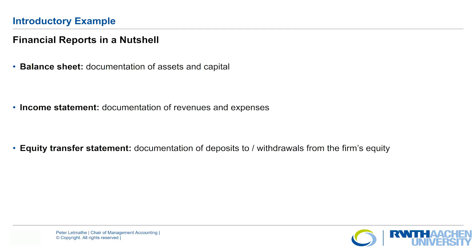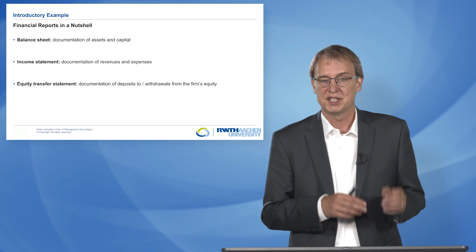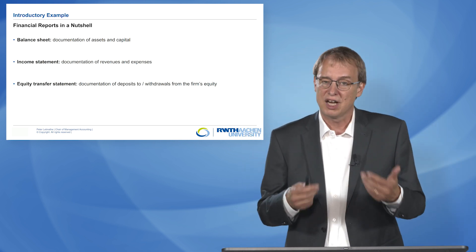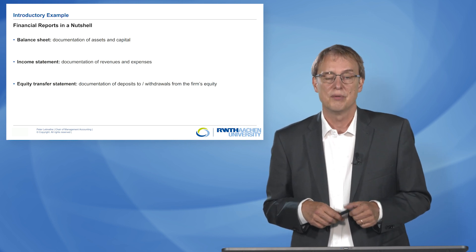We can distinguish basically three reports. Of course the balance sheet, which you might be familiar with, documents assets on the left side and capital on the right side. If we have an enterprise, we want to know how much money we make — do we generate a profit with our operations — and this is what we calculate within the income statement. The income statement is basically the documentation of revenues on the right side and expenses on the left side, and the difference is the income or profit we generate.